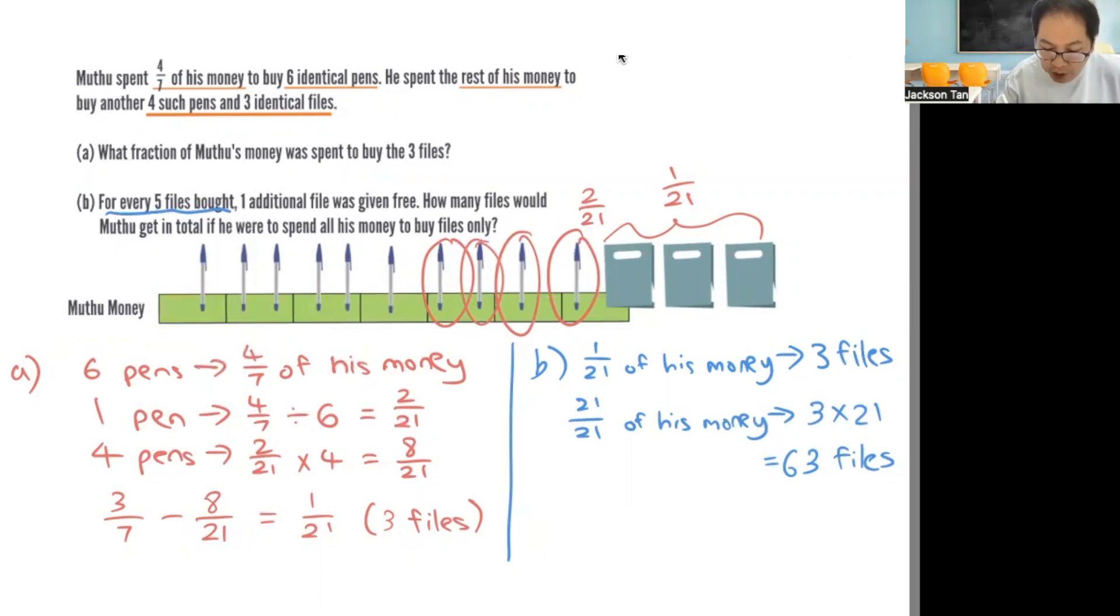So let's find out how many additional files. Sixty-three divided by five, that will be equal to twelve remainder three. So total there are twelve additional files given free.